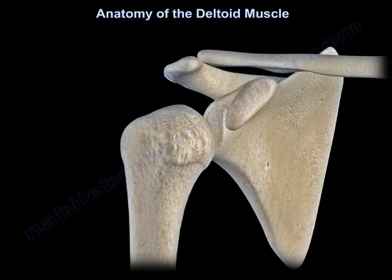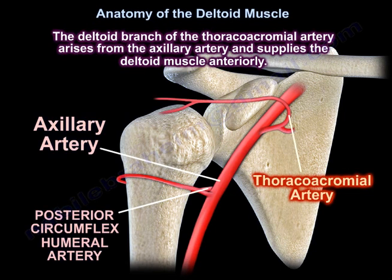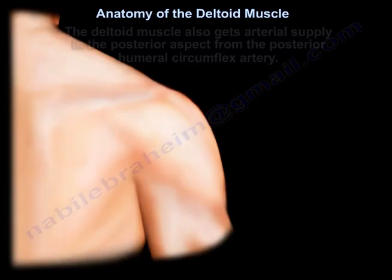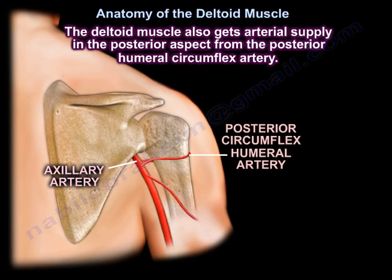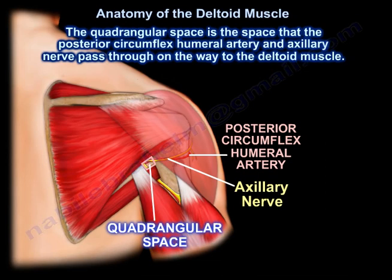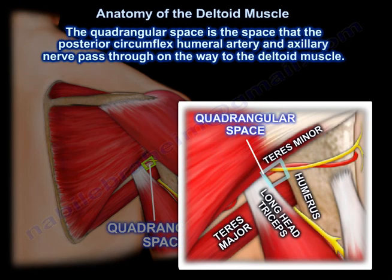The deltoid branch of the thoracoacromial artery arises from the axillary artery and supplies the deltoid muscle anteriorly. The deltoid muscle also receives arterial supply on the posterior aspect from the posterior humeral circumflex artery. The quadrangular space is the space through which the posterior circumflex humeral artery and the axillary nerve pass on the way to the deltoid muscle.